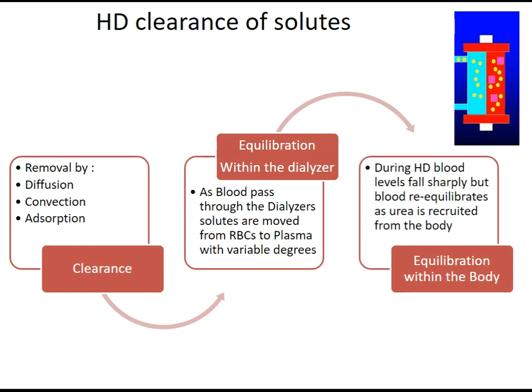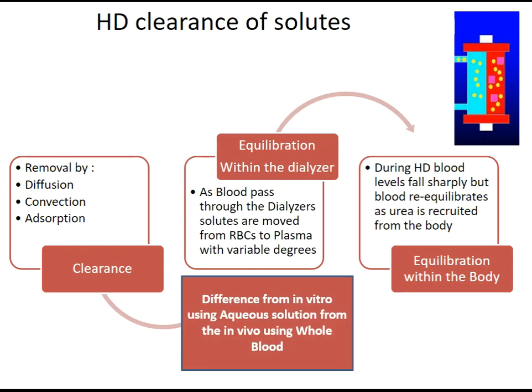During hemodialysis, blood levels fall sharply but blood re-equilibrates as urea is recruited from the body. Measuring urea in vitro is nearly the same as in vivo because urea equilibrates quickly from red blood cells to plasma inside the dialyzer, while creatinine equilibrates very slowly. This results in approximately a 20% drop in clearance compared to manufacturing data.